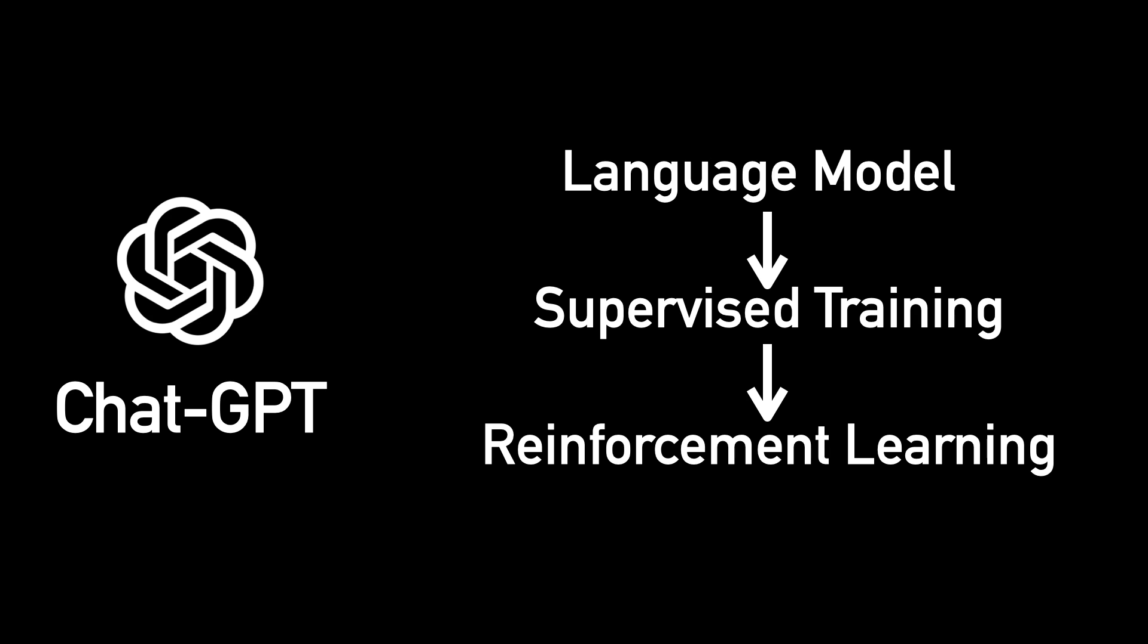Well, ChatGPT is trained in three stages: the language model, also known as the pre-training phase, the supervised training, also known as the fine-tuning phase, and then finally, reinforcement learning. Let's look at the first stage in further detail.